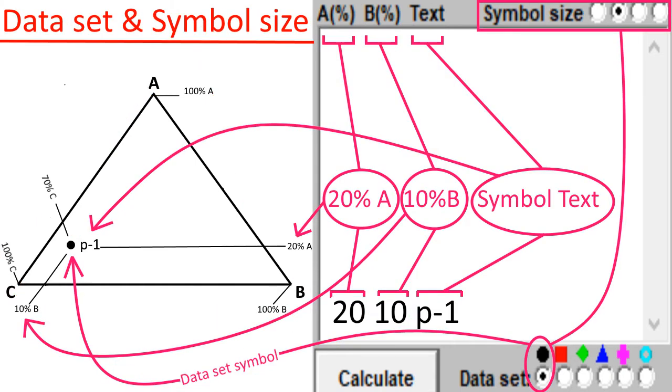The plot points of the first data set consist of symbols looking like black filled circles. Insert the coordinate values for A and B, and also insert a symbol text, for example P1, separated by spaces. Press the calculate button to view the plot inside the triangular frame.